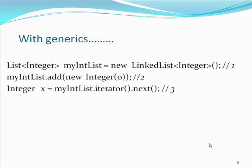Here is the same example with generics. Notice the type declaration for the variable myIntList — it specifies that this is not just an arbitrary list, but a list of integer, written List<Integer>. We say that List is a generic interface that takes a type parameter, in this case Integer. We also specify a type parameter when creating the list object. The cast is gone on line number 3.